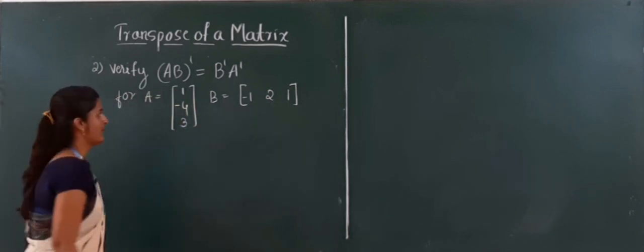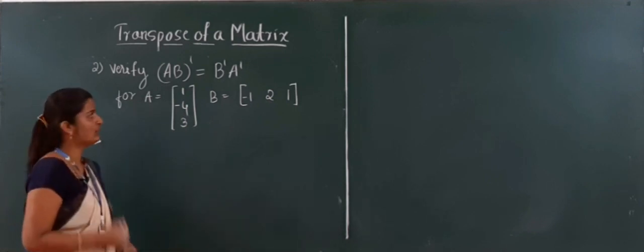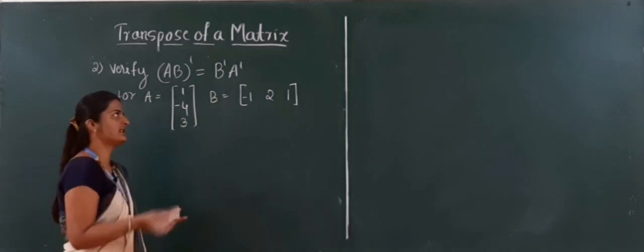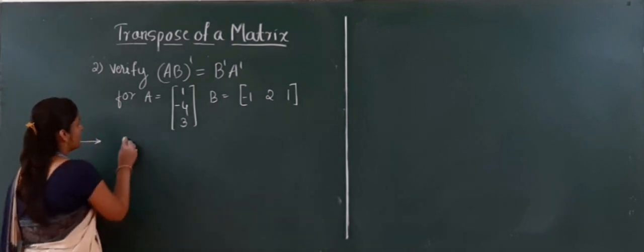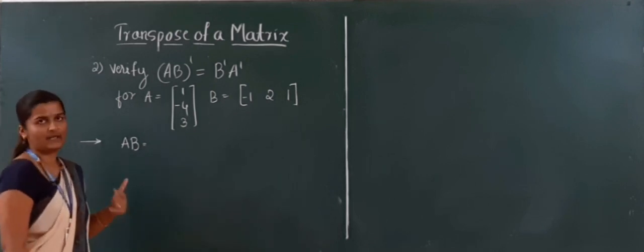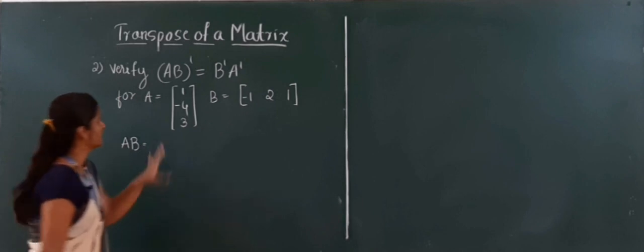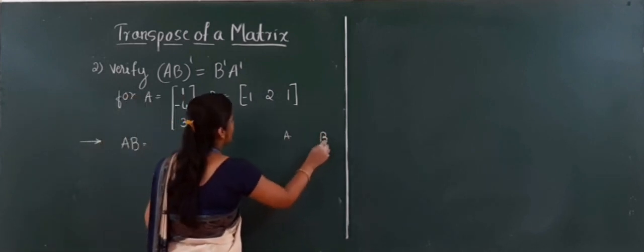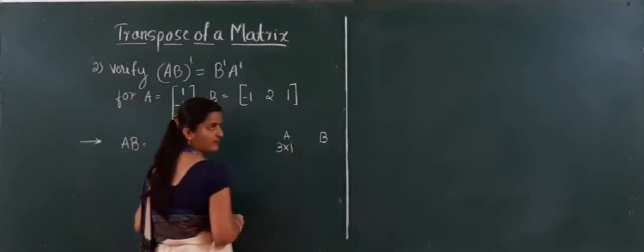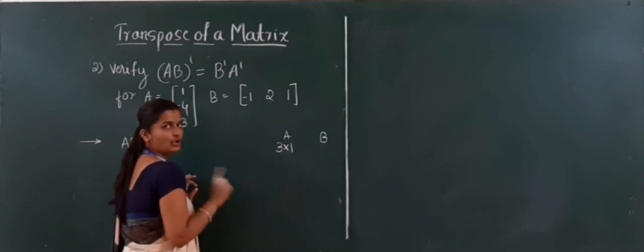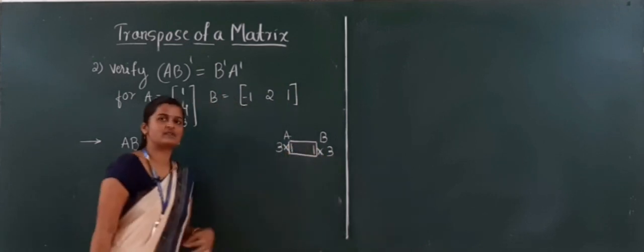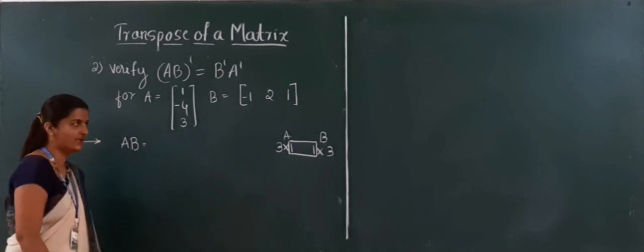I will find the LHS first, then the RHS, then equate them. First, I find AB. Matrix A has order 3 by 1 (column matrix) and matrix B has order 1 by 3 (row matrix). Number of columns in A equals number of rows in B, so multiplication is possible.